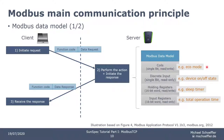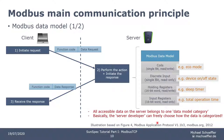Here are some examples. Some devices have an ECO mode to consume less power — this could be coil data, as it requires only a single bit and can be read and set. If Modbus data holds the on-off state of a device that should not be turned off by setting the Modbus data element, this would be a candidate for discrete input. A sleep timer requires more than one bit to represent a number, so it's a good candidate for a holding register. The total operation time is data that maybe should not be changed, so input registers might be a good choice. The developer of a Modbus server is basically free to choose how the data is structured — so the ECO mode could also be a holding register if it makes sense.